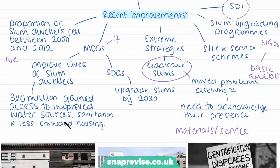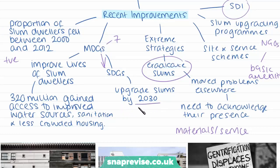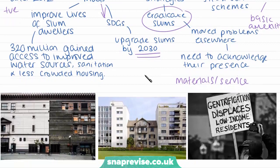Despite this, the total number of people living in slums has continued to increase. One of the targets in the Sustainable Development Goals — created in 2015 as a follow-up to the Millennium Development Goals — has been to ensure access for all to adequate, safe and affordable housing and basic services, and to upgrade slums by 2030. There is a lot of work going on around the world to help improve slums, as it's one of the biggest problems associated with urban growth.